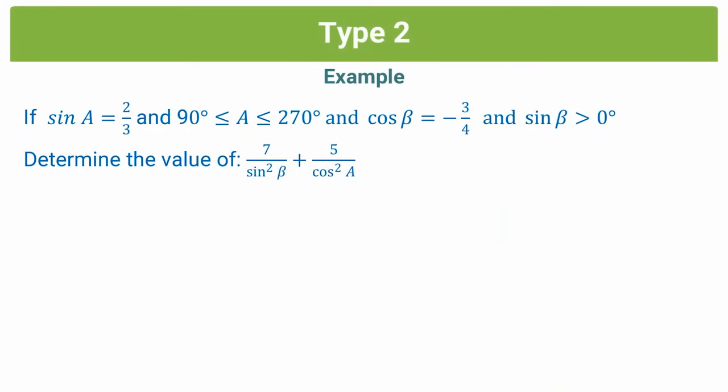So what exactly makes these examples hard? In this question, you can see that instead of being given one trig equation, we are actually given two equations, and we also have two different angles — A and beta. These are the two key features that make this a hard trig question, because you have to get the variables x, y, and r for both A and beta. But the method remains the same; we'll follow the exact same method to solve the question.